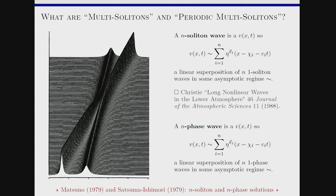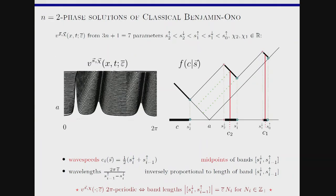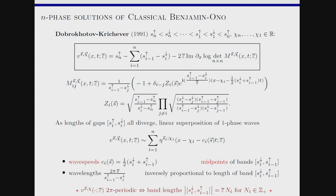I'll work with a presentation of these n-phase solutions by Dobrokhotov-Krichever. In their work on modulation theory showing the Whitham equations were completely decoupled, at the very beginning they gave a completely new formula for these n-phase solutions. It's some constant times the logarithmic derivative of a determinant of some matrix — simpler than the Its-Benz-Faev formula for n-phase solutions of KdV. The asymptotic regime where this becomes a bunch of periodic solitons is when all of the gaps diverge. The wave speeds are the midpoints of the bands, and the wavelengths are inversely proportional to the bands.